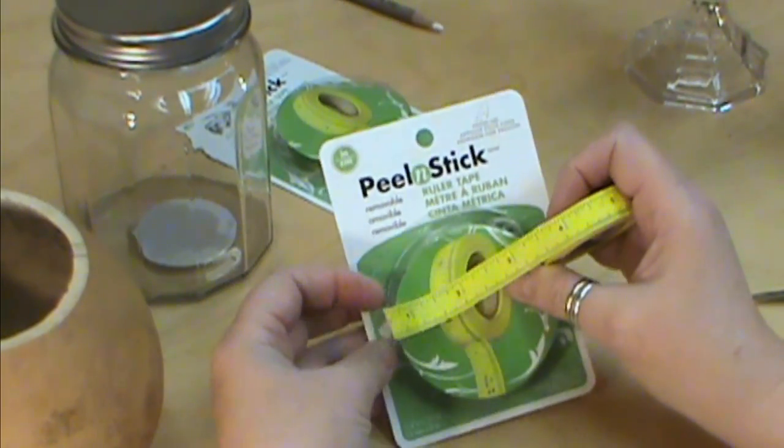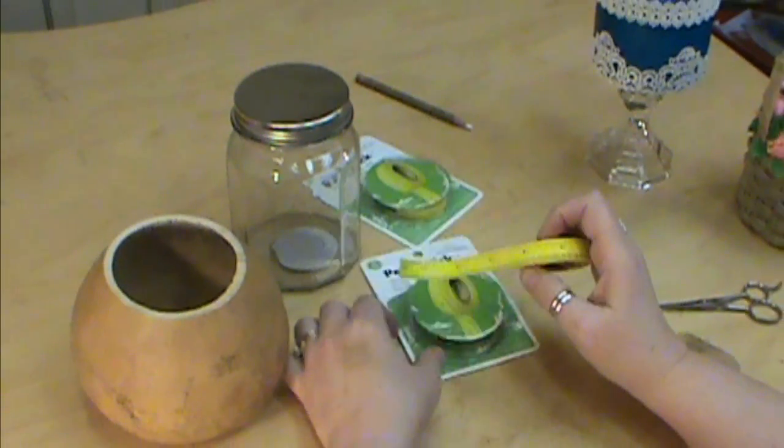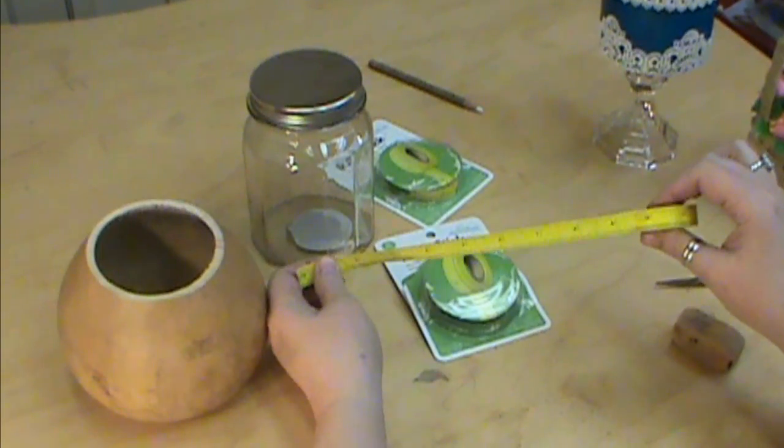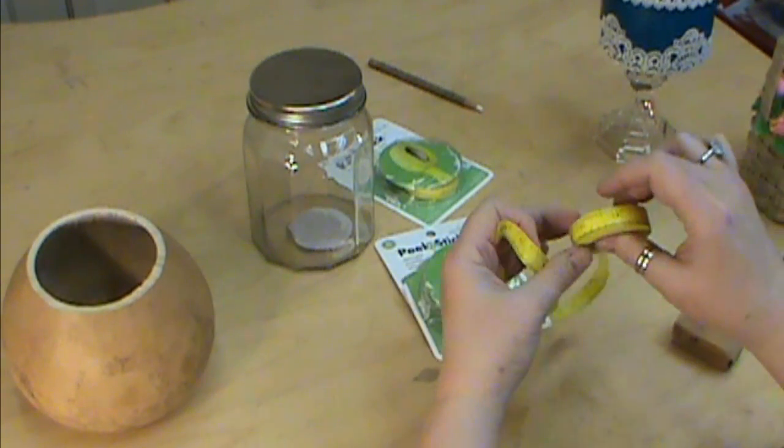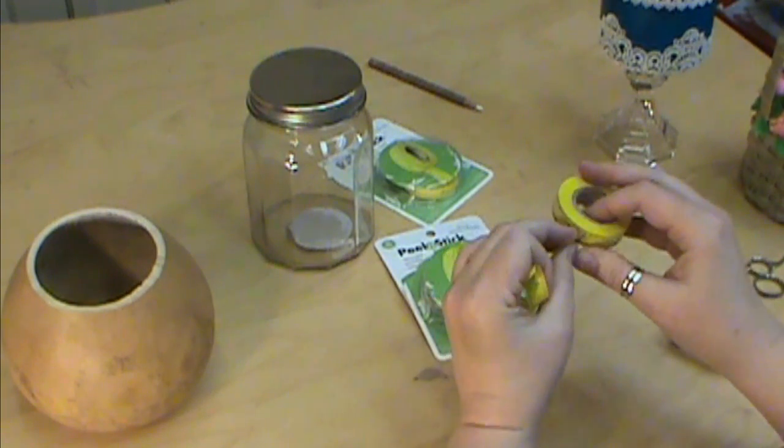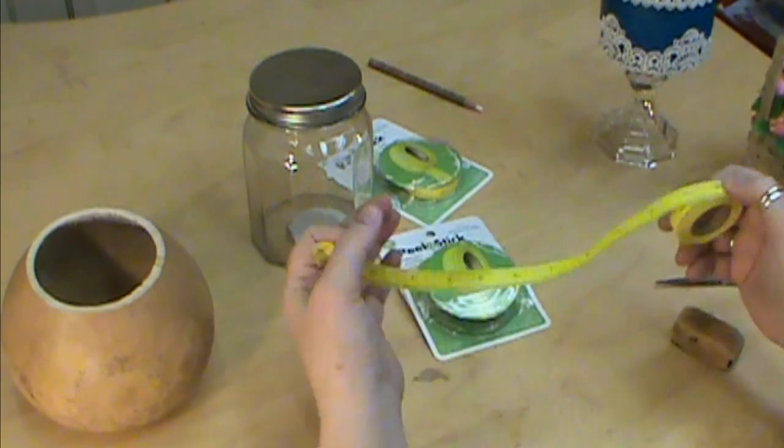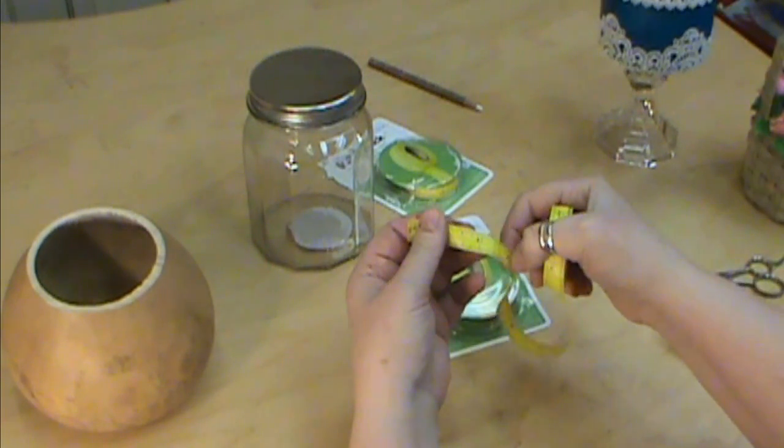It is a half inch wide and it is 10 yards long. It comes in foot lengths so it starts at 12 and then at 12 it will start over again at 1 and it does have perforated lines so it's easier to tear there.